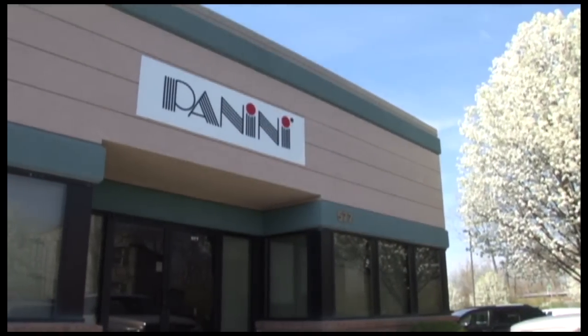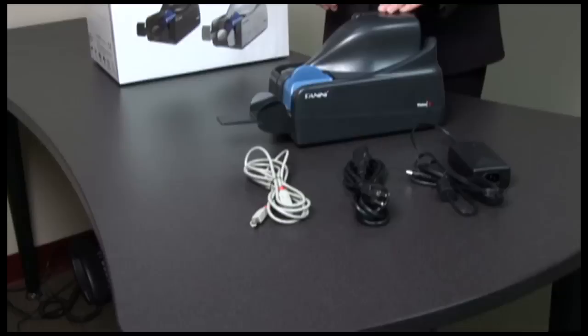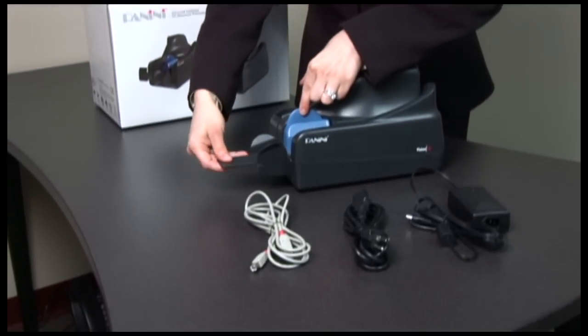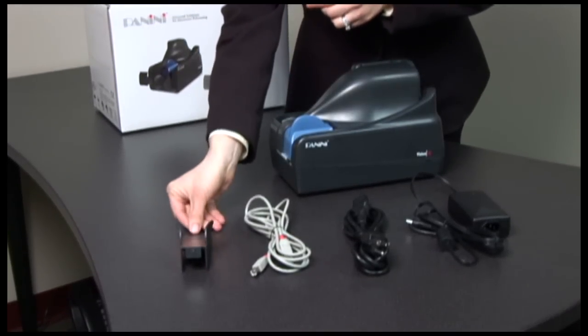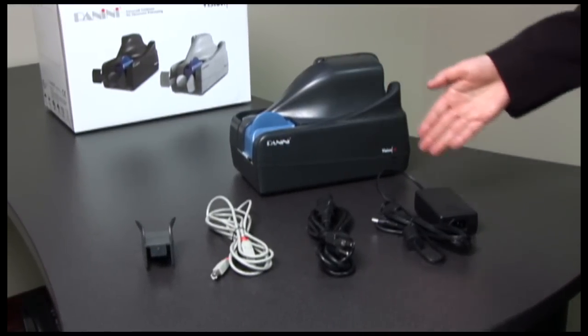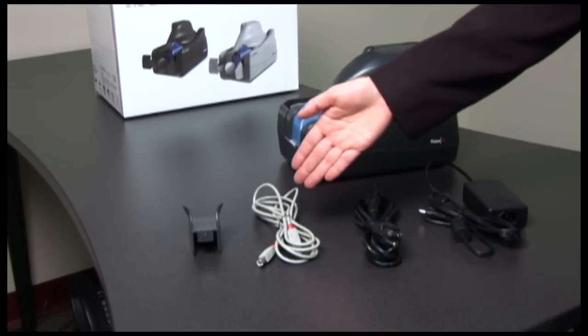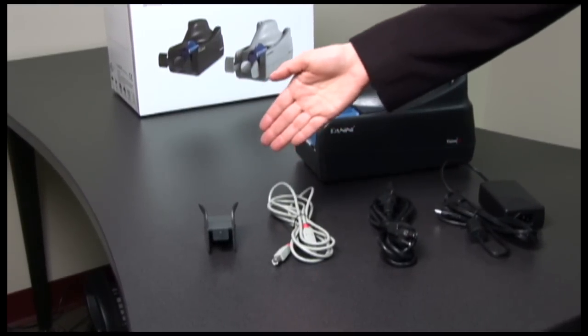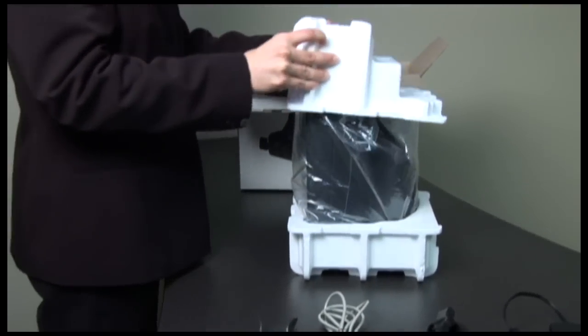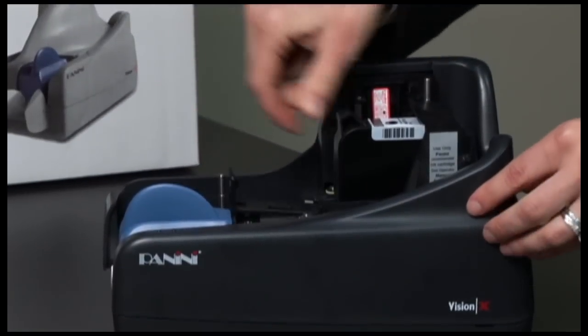You may need to ship your VisionX to Panini North America for depot repair. When packaging a VisionX scanner, the following components must be returned. Be sure all components shipped are the original components of the scanner: VisionX scanner, power supply and power cord, USB cable, and feeder extension. Please use the original shipping material when returning the device. Remove the ink cartridge from the device.